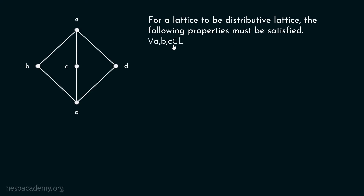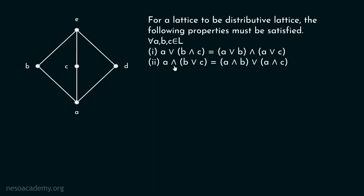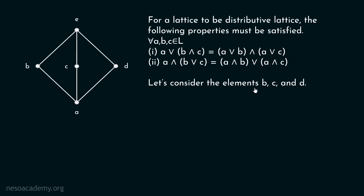For all A, B, C belonging to L: A∨(B∧C) must equal (A∨B)∧(A∨C), and A∧(B∨C) must equal (A∧B)∨(A∧C). These two properties must be satisfied. This means we have to consider three elements at a time — A, B, and C — which can be any elements of this particular lattice. Let's find out whether this lattice is a distributive lattice by applying this definition. Let's consider the elements B, C, and D and apply these properties.